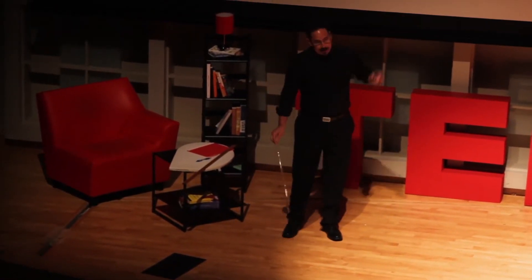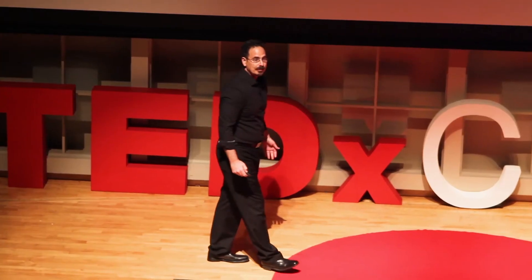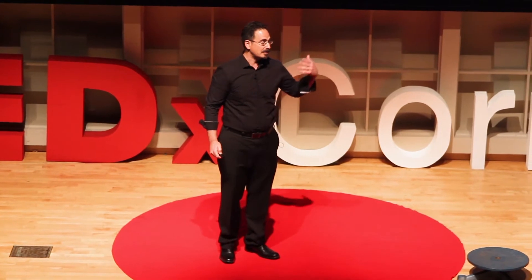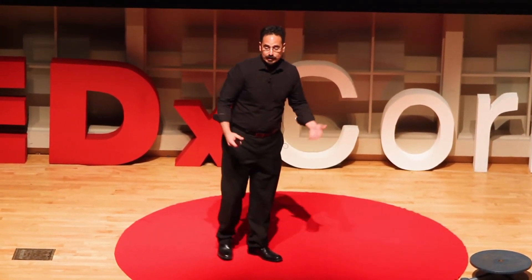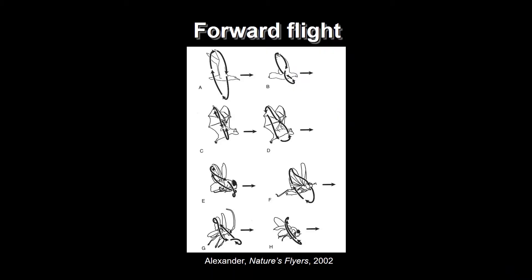So by being able to capture these maneuvers, we're able to say something about how these insects are controlling the aerodynamic forces that get them to do the things that they do. For example, we could start to test some of the basic ideas that people had put forward. If you take nature's flyers and open it up, you see that the way that insects are supposed to produce a forward thrust is by taking their wing stroke, tilting it, so that some of the lift forces that they're using to keep them aloft are redirected in the forward direction.